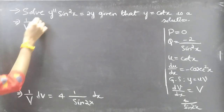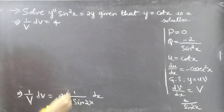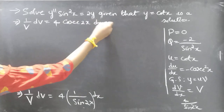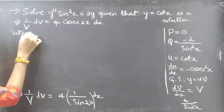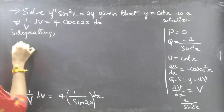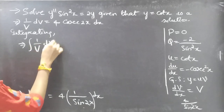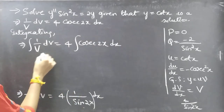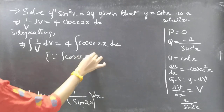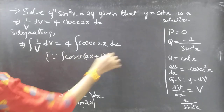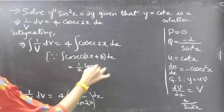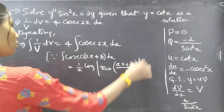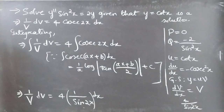Now let's perform integration since the variables are separable: ∫(1/V)dV = 4∫cosec 2x dx. Using the standard formula ∫cosec(ax + b)dx = (1/a)·log|tan((ax+b)/2)| + C, we compare cosec 2x with cosec(ax + b), giving a = 2 and b = 0.